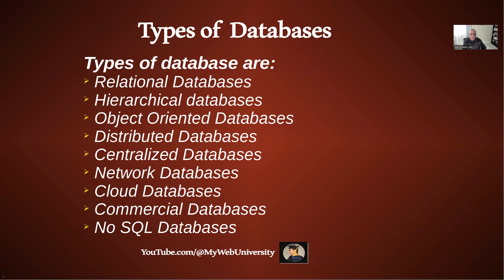Now, types of databases. There are a number of types. Among them is the relational database, which uses tabular forms and relations between tables — one-to-one, one-to-many, many-to-many. Relational databases include Oracle, MySQL, Microsoft SQL Server, and Microsoft Access — all examples of relational databases.